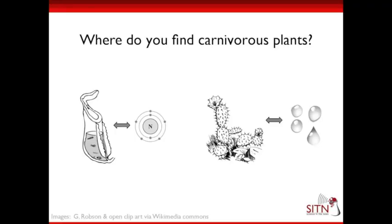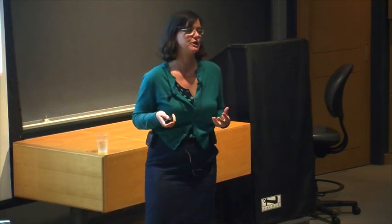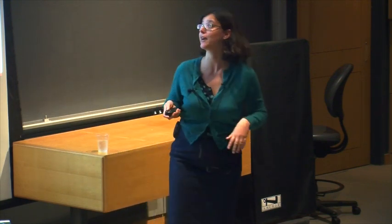I like to think of pitcher plants in relation to nutrients the way cacti are to water. Pitcher plants are really good at getting and holding on to nutrients in areas that don't have much — they're very nutrient poor. They're good at getting nutrients from their insect prey, just like cacti are really good at getting and holding on to water in deserts where there's very little water.